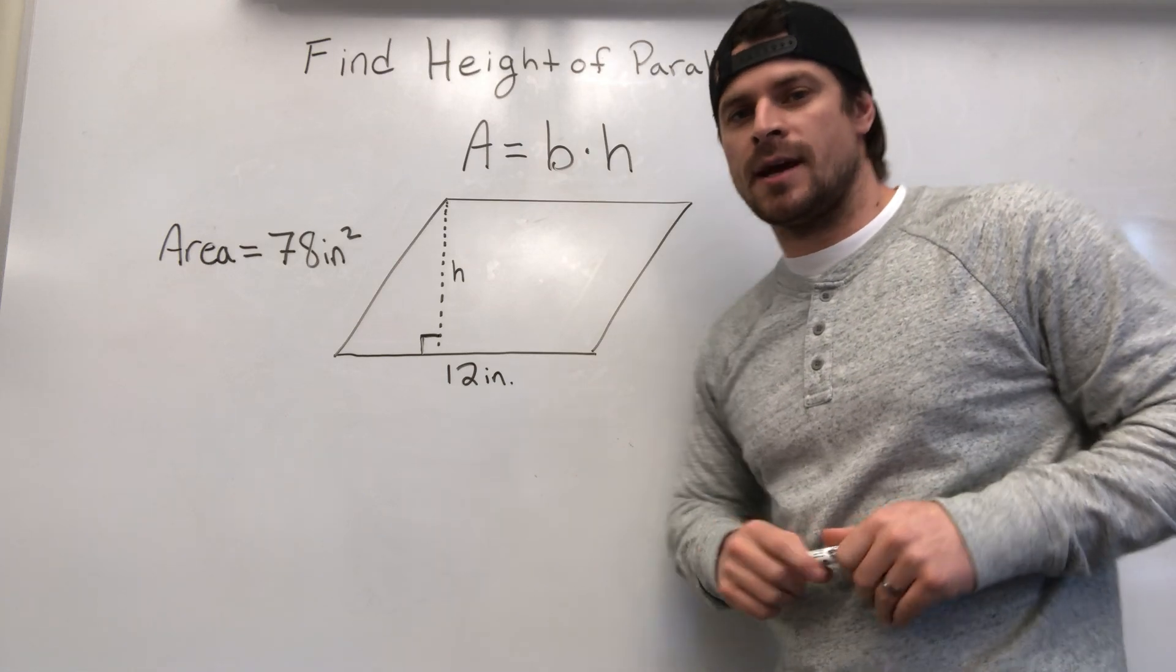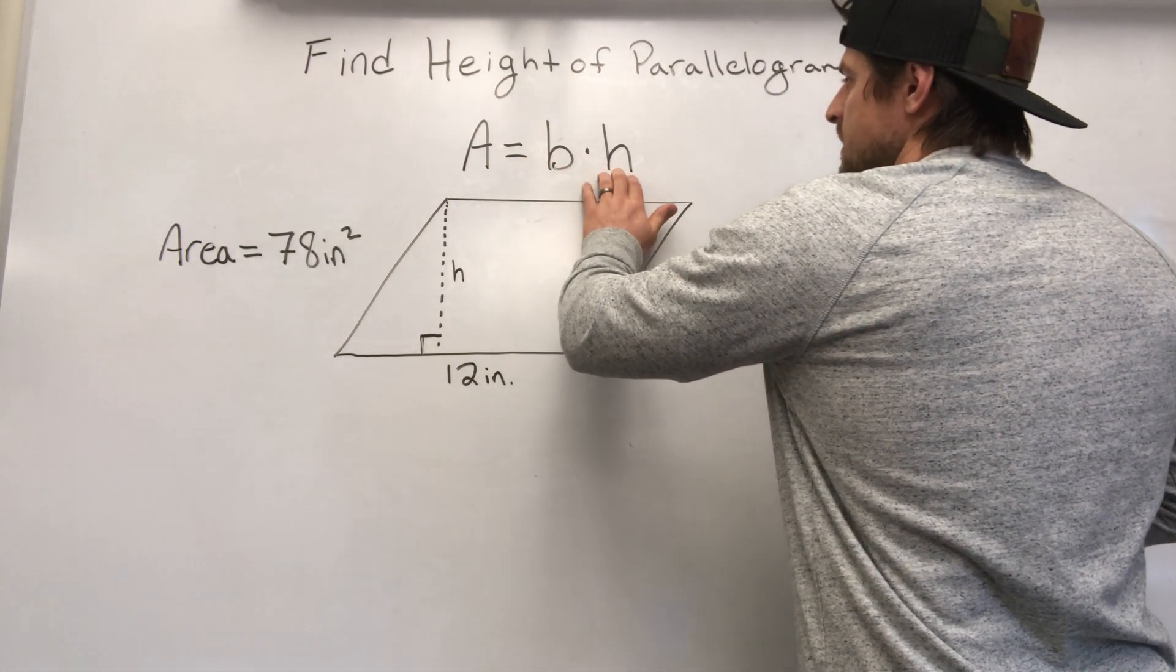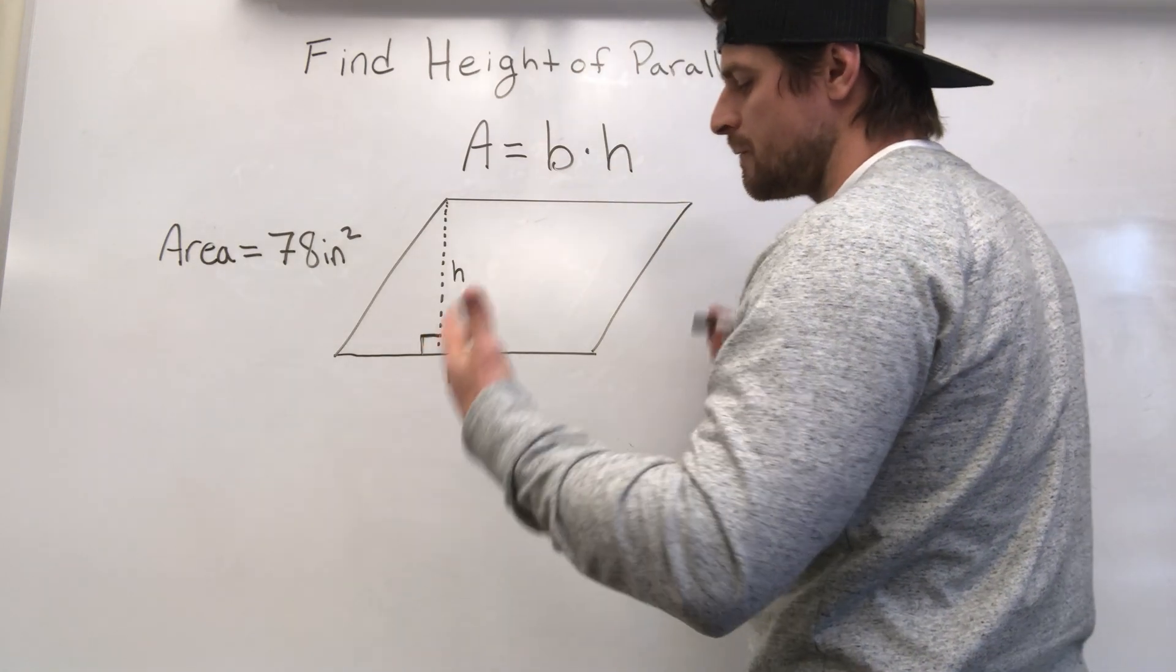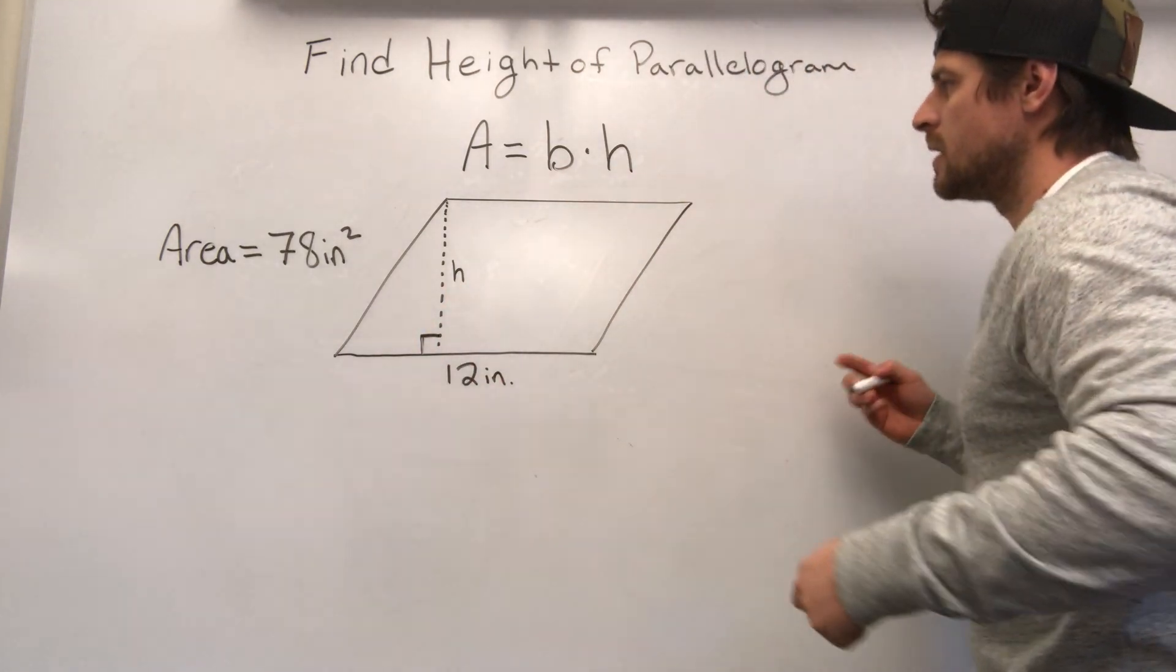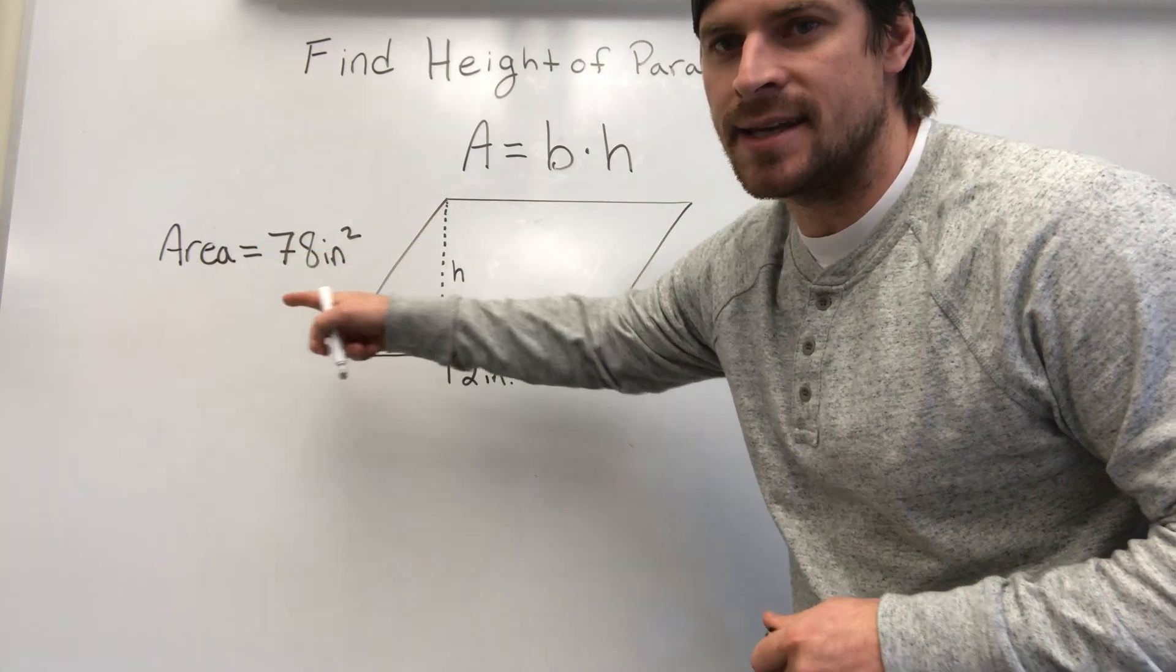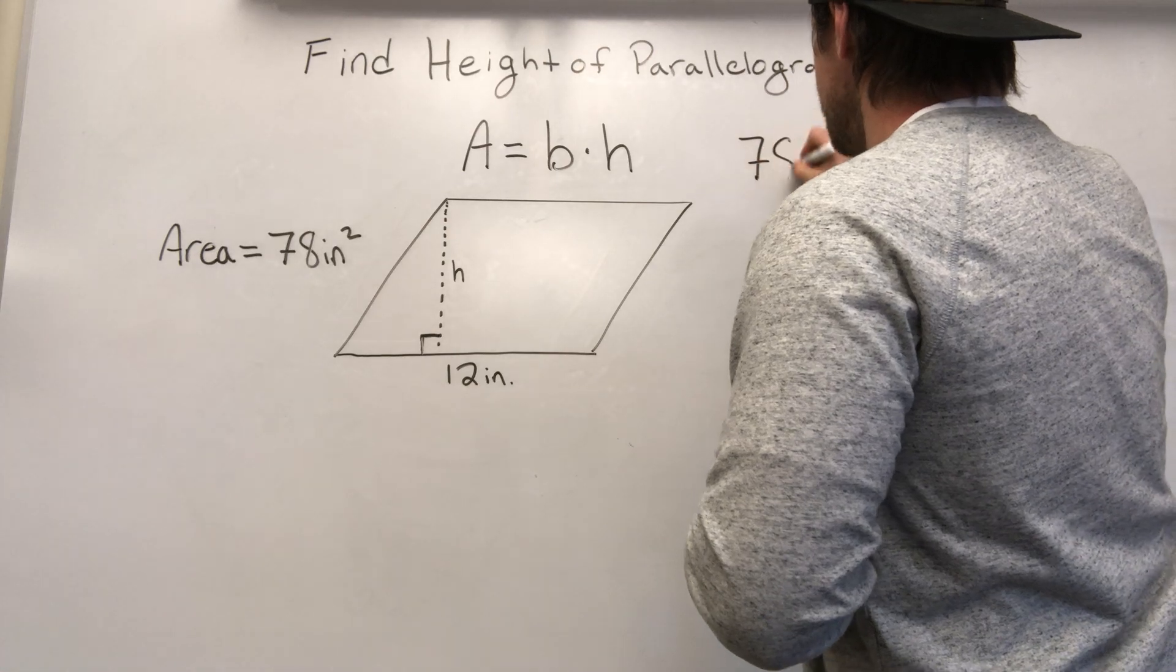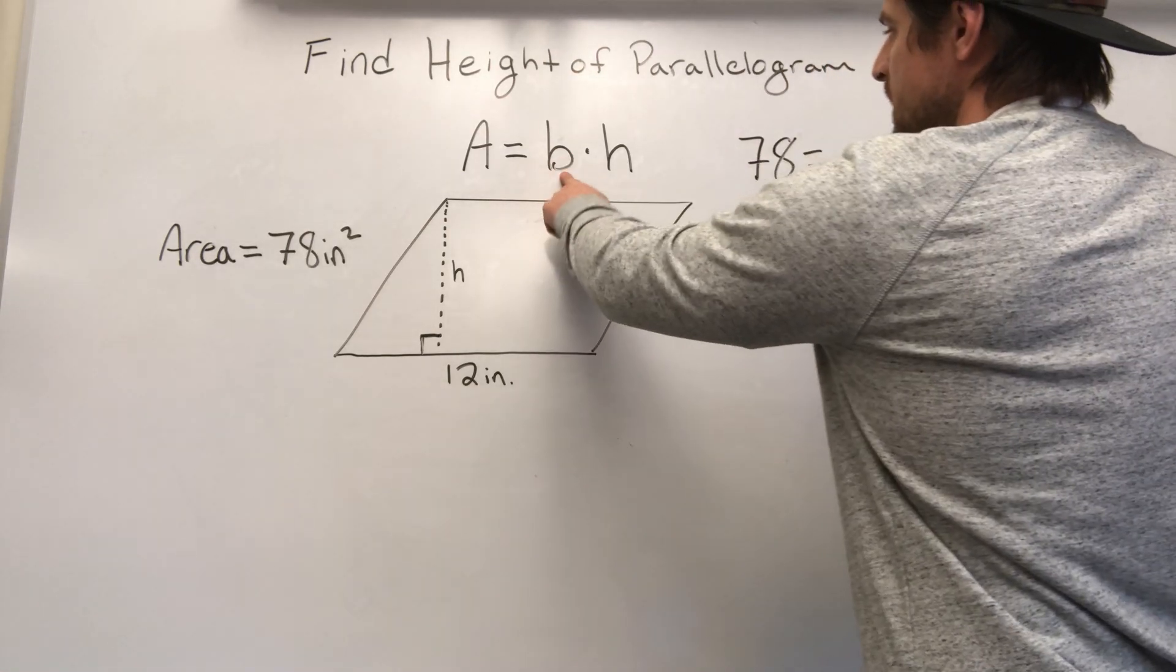Let me show you exactly how to do that. Pay close attention. Area equals base times height. That is our formula for the area of a parallelogram. So if we know what the A is, we know the area is 78 inches squared. We can put that down. 78 equals b times h.